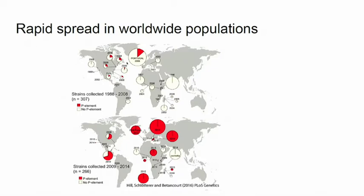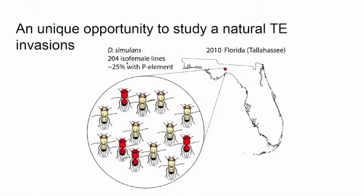When you look at 2006 and 2008, the P element is almost nowhere to be found — red is the P element — not found in any population. But when you look a little later at 2009, 2013, and 2014, you see it's all red: all populations have it. This is great work from my colleagues Tom Hill, Christian Fletterer, and Andreas Pittencourt. It's happening rapidly in worldwide populations.